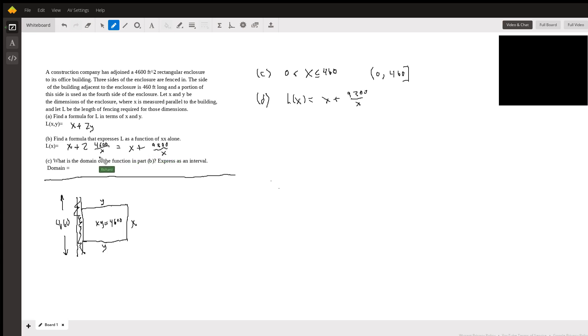Part C, what's the domain of the function? Well, we have to have some fencing, so the bottom limit would be zero. It has to be strictly greater than zero, not equal to zero. And we're told that we can't use the entire wall, so that makes x below 460.